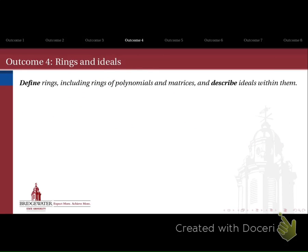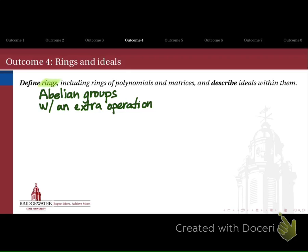Outcome number four is our next big milestone: rings. We want to be able to define a ring — including rings of polynomials and matrices — and then to describe ideals within them. A ring is an abelian group with an extra operation. The classic example is just the ring of integers: Z is an abelian group under addition, and if we add multiplication, we get additional structure. Inside this ring we can add, subtract, and multiply, but we can't necessarily divide.